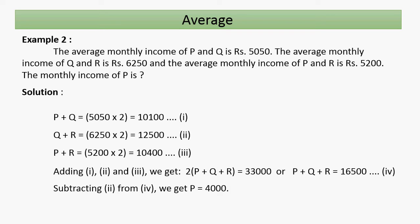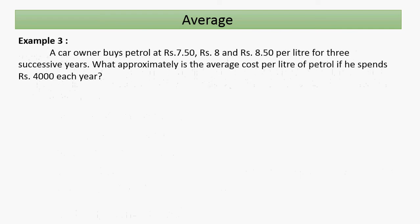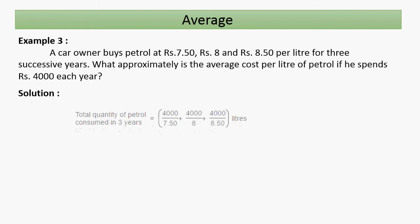So P's monthly income is 16500 minus 12500, which equals 4000. That is our answer. Next example: a car owner buys petrol at rupees 7.50, rupees 8, and rupees 8.50 per liter for three successive years. What is the approximate average cost per liter if he spent rupees 4000 each year?